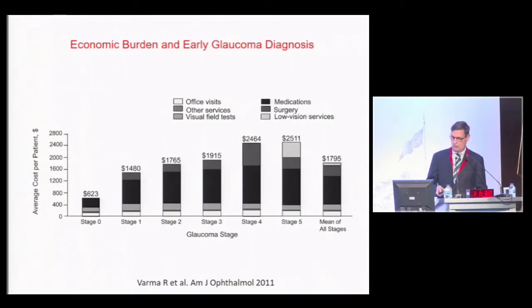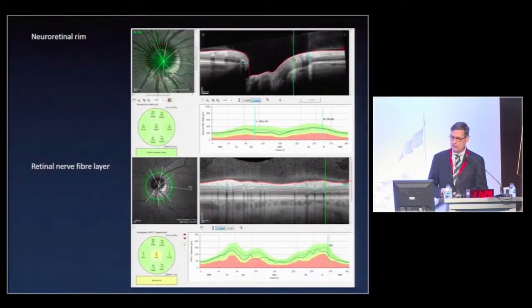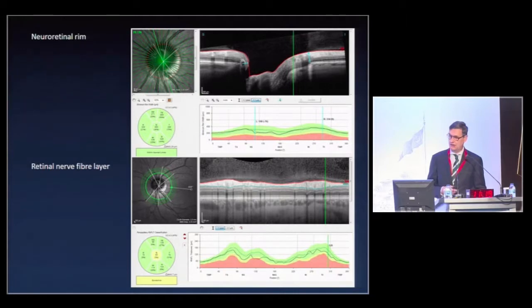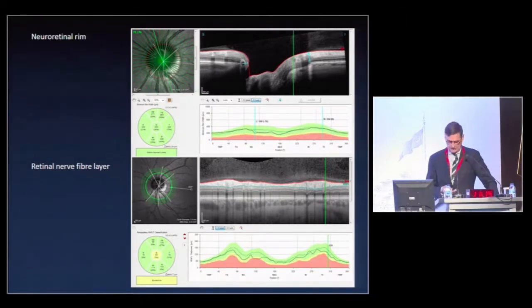So getting back to our topic, we have two measurements related to glaucoma concerning the optic disc and peripapillary area: that's the neuroretinal rim measurement, as we introduced in the last talk, and the retinal nerve fiber layer measurement peripapillary around the optic disc.